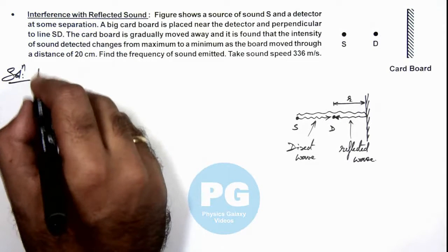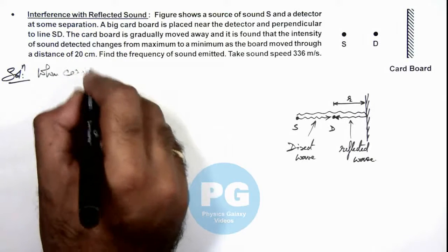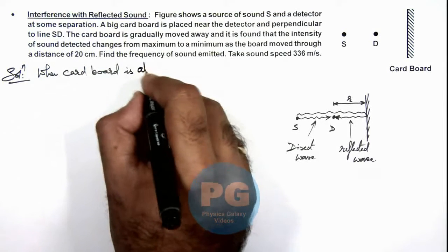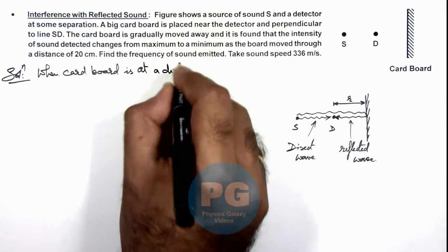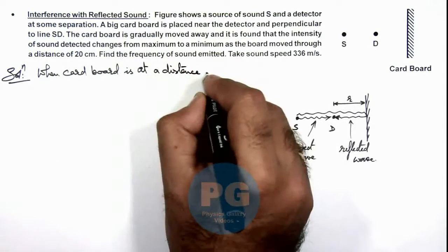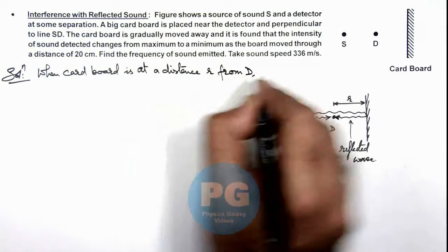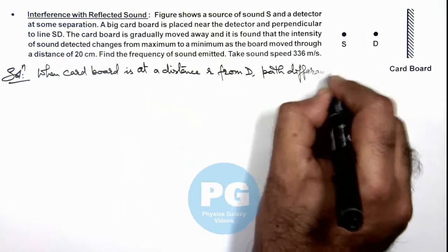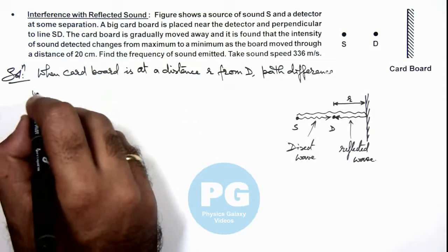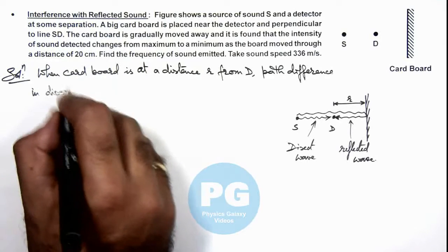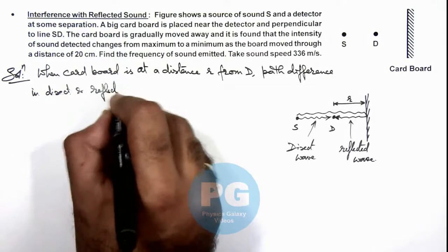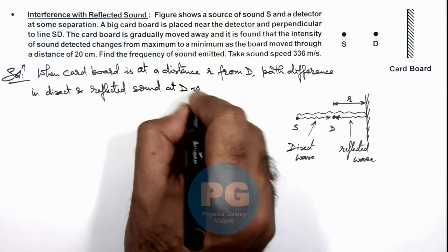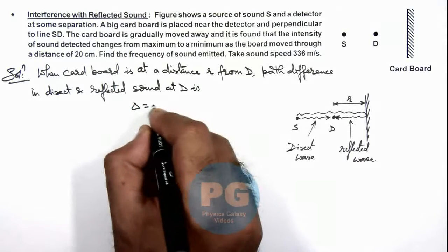So we can write when cardboard is at a distance r from detector, path difference in direct and reflected sound at D is, this delta can be written as 2r.